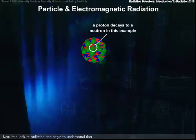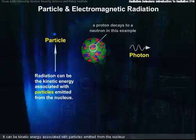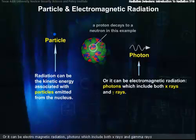Now let's look at radiation and begin to understand that. Radiation is simply energy in some form. It can be kinetic energy associated with particles emitted from the nucleus, or it can be electromagnetic radiation, photons, which include both x-rays and gamma rays.